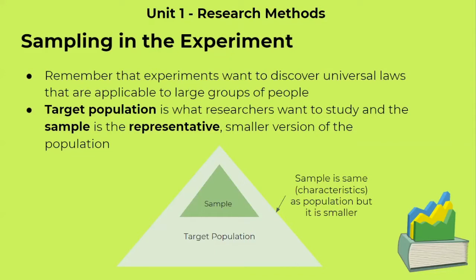However, it is not feasible to test these large populations. So we're going to get a representative sample of this population. The sample is going to be smaller, but also have the same characteristics as the target population. As shown in this diagram, both are triangles, meaning same characteristics, but the target population is larger and the sample population is within that target population. It is not possible to sample and test all of the people in the target population, so we're going to obtain a representative sample that is more manageable for our study.